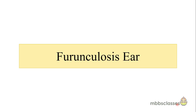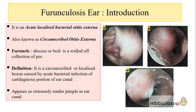Hello everyone, welcome to MBBS Classes. I am Dr. Hanifa. Today in this video I will be talking on furunculosis of the ear. This disease is also known as acute localized bacterial otitis externa, or the other name is circumscribed otitis externa. Furunculosis of the ear is a circumscribed or localized lesion caused by acute bacterial infection of the cartilaginous portion of the ear canal.